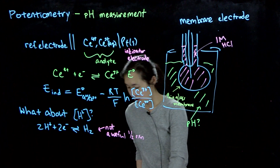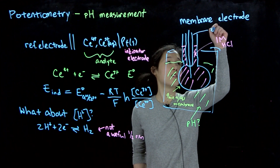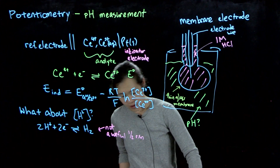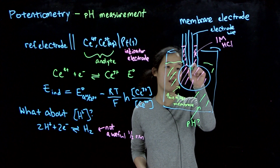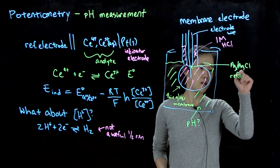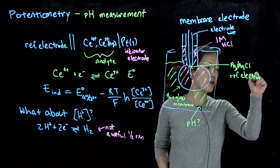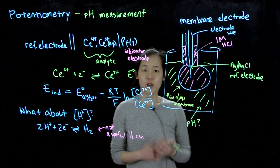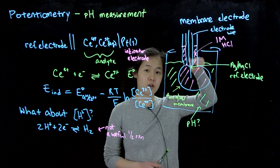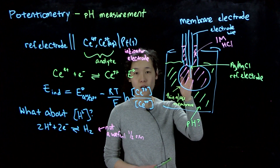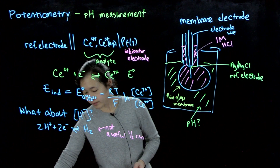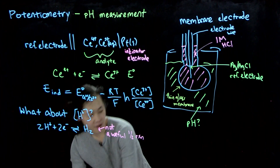Inside the bulb, connected to the electrode wire, might be a silver-silver chloride reference electrode. What researchers found many years ago was that as you change the pH of the outer solution, that silver-silver chloride electrode can sense it, and the indicator electrode potential changes in a Nernstian fashion with pH.